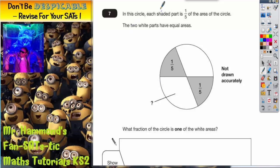Question 7. In this circle, each shaded part is 1 fifth of the circle. The two white parts have equal areas.